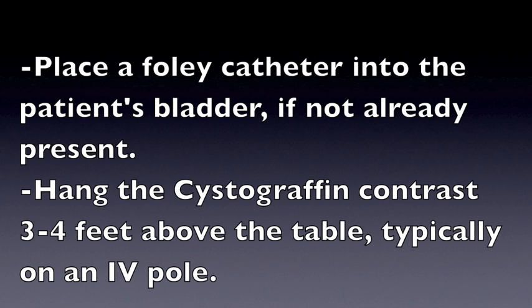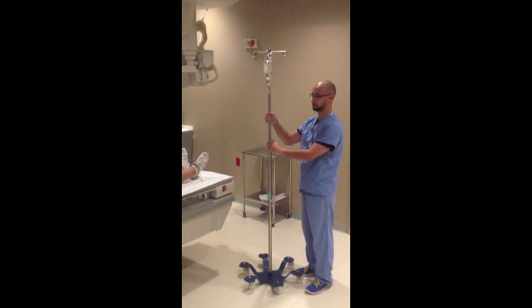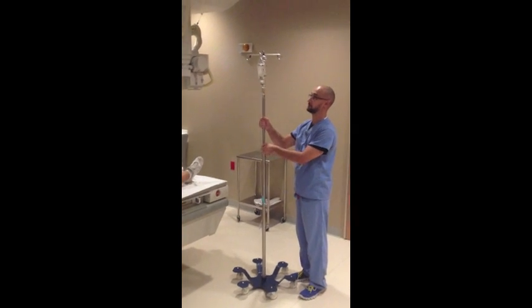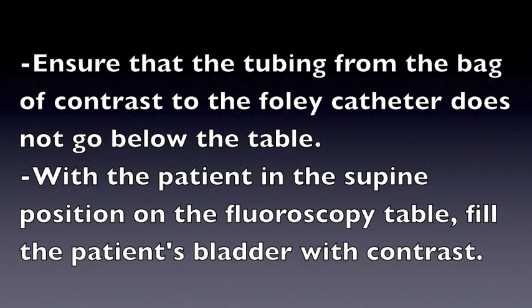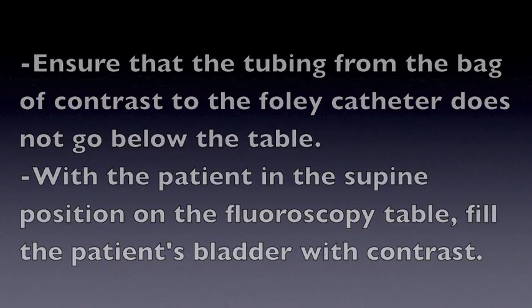Place a Foley catheter into the patient's bladder if not already present. Hang the cystogram contrast 3 to 4 feet above the table, typically on an IV pole. Ensure that the tubing from the bag of contrast to the Foley catheter does not go below the table. With the patient in the supine position on the fluoroscopy table, fill the patient's bladder with contrast.